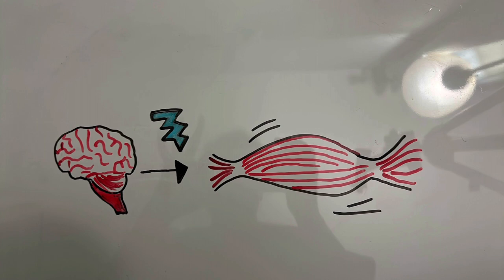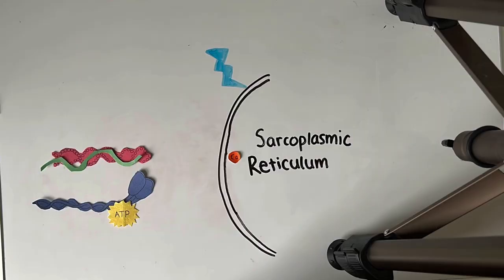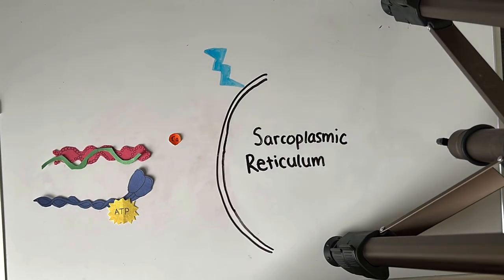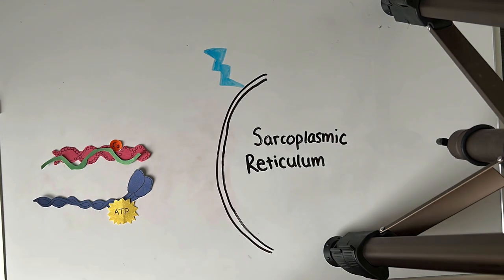The first stage of muscle contraction is triggered by a nerve impulse sent from the brain to the skeletal muscle tissue. This impulse causes a release of calcium into the sarcomere. When calcium binds to troponin, it changes its shape.